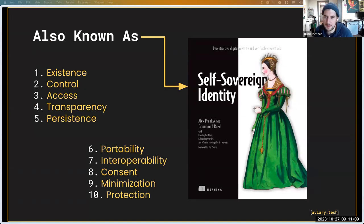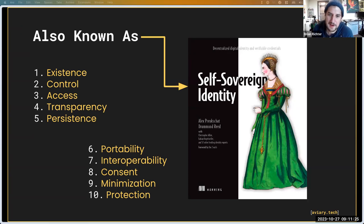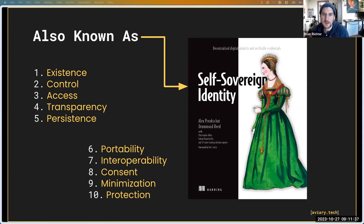Decentralized identity and self-sovereign identity go hand in hand — they're two definitions of the same thing. Drummond Reed wrote a really good book on the topic called Self-Sovereign Identity, along with a few other people. It's a good base to start from, though things are rapidly evolving. The term self-sovereign identity was coined by Christopher Allen many years ago.